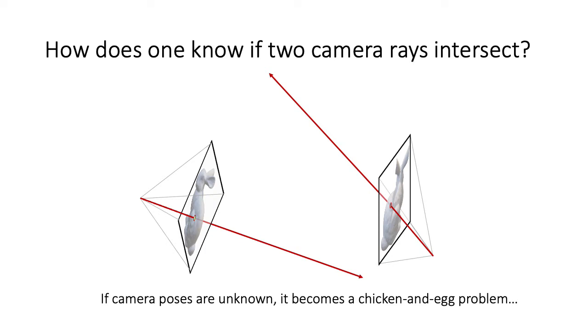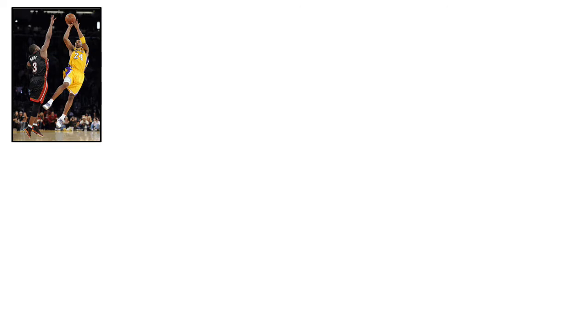Our key insight is to exploit the foreground objects. Specifically, we try to hallucinate what we can see on the other side. Given an input image, we first predict the shape and pose of the objects in the scene.